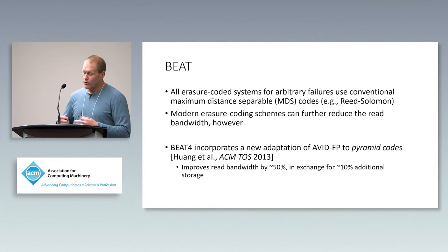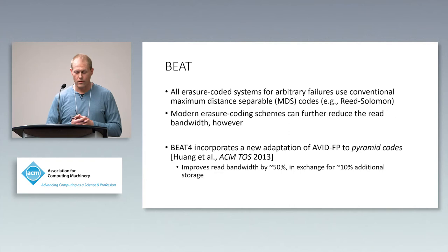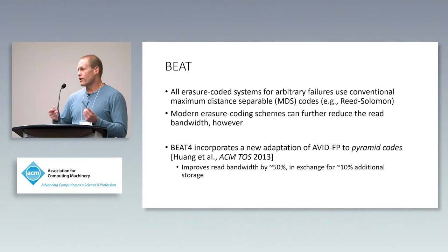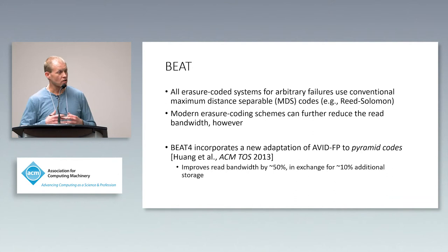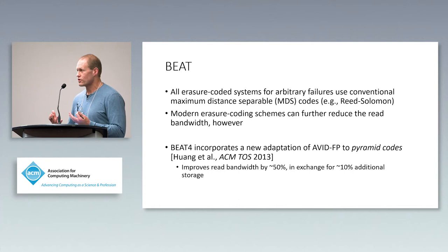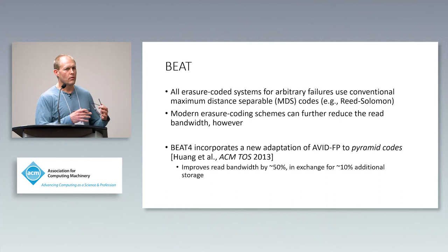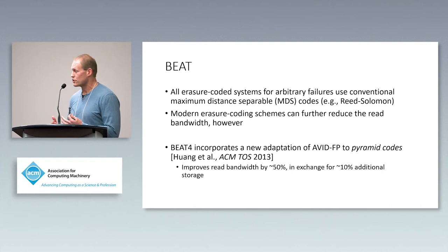A key ingredient in BEAT is a generalization of this homomorphic fingerprinted cross checksum. The original work focused on maximum distance separable codes like Reed-Solomon codes, but there's been work on new erasure code constructions more bandwidth-efficient for supporting fast reads. We generalize the fingerprinted cross checksum to pyramid codes, which aren't MDS but allow very efficient reads — saving, for example, 50% of read bandwidth at roughly 10% cost in storage.